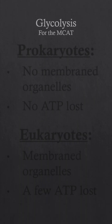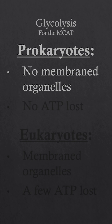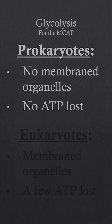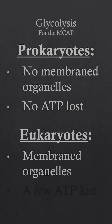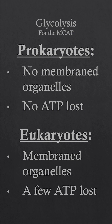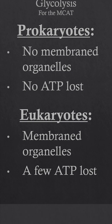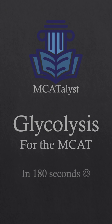Finally, it is important to note that prokaryotes do not have any membrane-bound organelles, so they won't lose any ATP shipping things across membranes. Eukaryotes, however, do have membrane-bound organelles such as the mitochondria, so we lose a few ATP per glucose because we have to transport molecules like NADH across the mitochondrial membrane, which costs energy. That was glycolysis for the MCAT in 180 seconds.